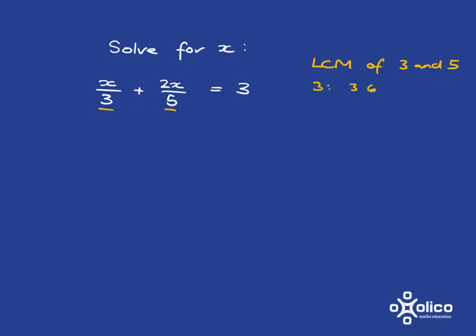So, I just go and I write out my multiples of 3, and I write out my multiples of 5, and pretty quickly, I discover that 15 is the lowest common multiple.